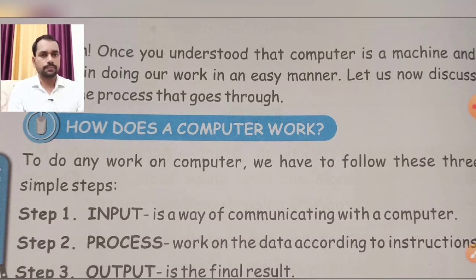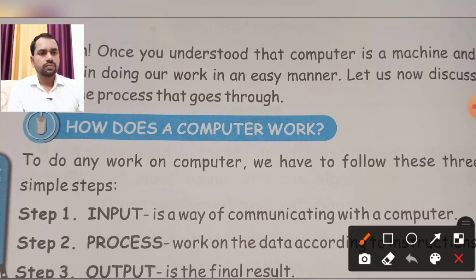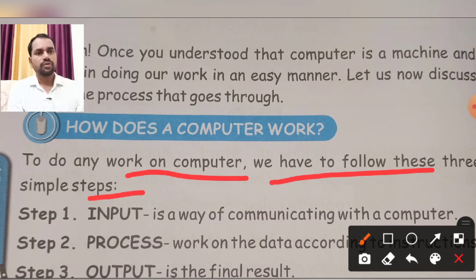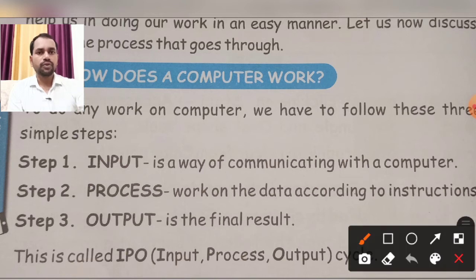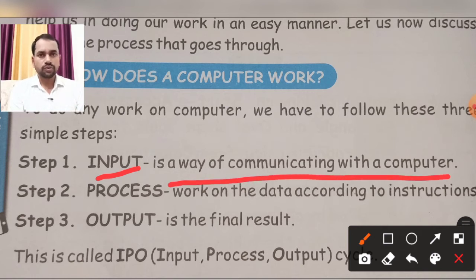How does a computer work? To do any work on computer, we have to follow these three simple steps. First step: Input is a way of communicating with a computer. Input can be through keyboard or through mouse, because keyboard and mouse both are input devices.